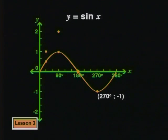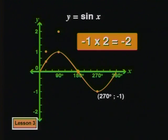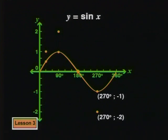Let's look at a negative value of y now. At 270 degrees, y is negative 1. This was the minimum value of the parent graph. If we multiply by 2, we get negative 2. So we can plot the point 270 and negative 2. Here, multiplying by 2 has caused a decrease. But the new point is still twice as far from the x-axis as the point on the parent graph.